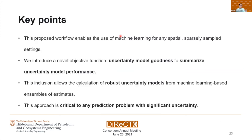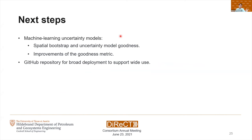The key points of this talk: this proposed workflow enables the use of machine learning for any spatial sparsely sampled setting. We introduce an objective function called the uncertainty model goodness to summarize uncertainty model performance. This inclusion allows the calculation of robust uncertainty models from machine learning based ensembles of estimates, and this approach is critical to any prediction problem with significant uncertainty. For next steps, we are introducing spatial bootstrap and uncertainty model goodness, working on improvements to the goodness metric, and developing a GitHub repository for broad deployment to support wide use with multiple machine learning models and auto hyperparameter tuning.